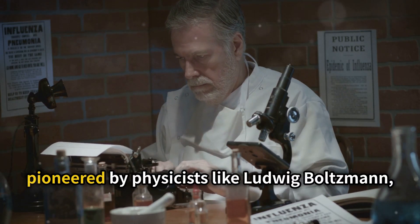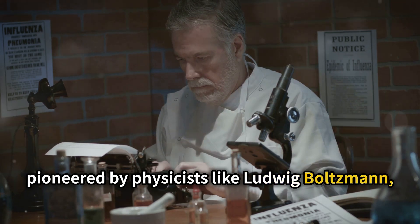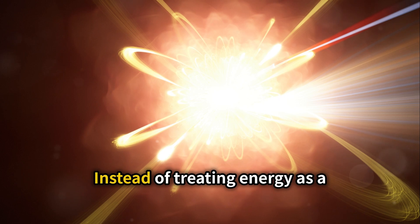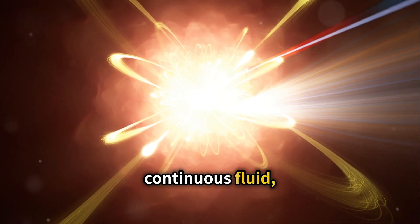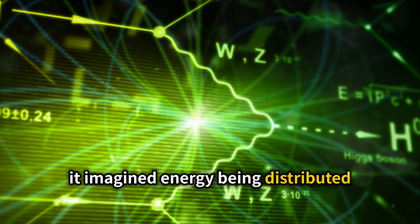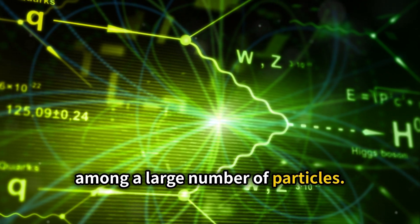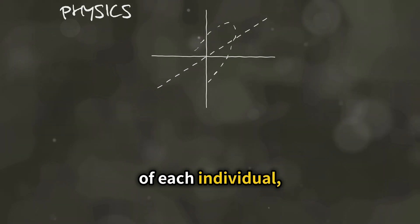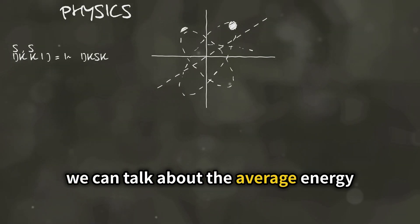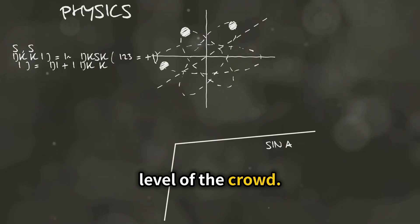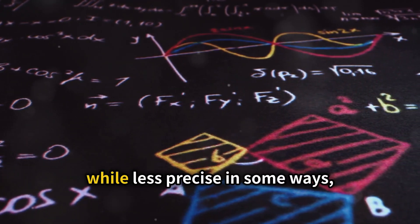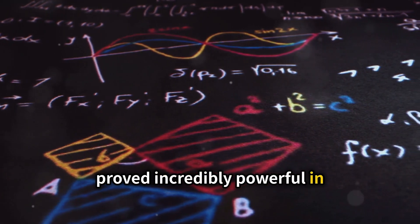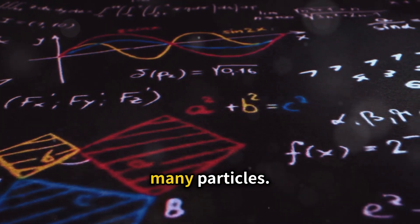Statistical mechanics, pioneered by physicists like Ludwig Boltzmann, offered a new way to think about heat and energy. Instead of treating energy as a continuous fluid, it imagined energy being distributed among a large number of particles. Think of a crowded room. Instead of tracking the precise movements of each individual, we can talk about the average energy level of the crowd. This statistical approach, while less precise in some ways, proved incredibly powerful in understanding the behavior of systems with many particles.